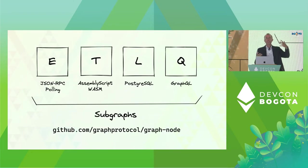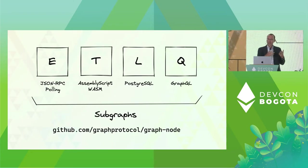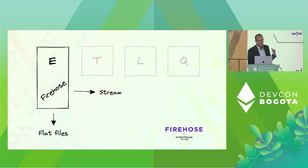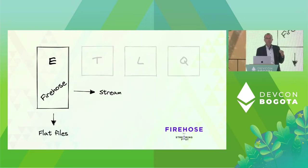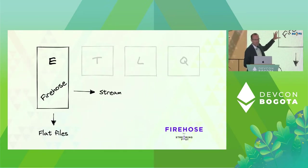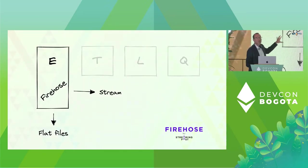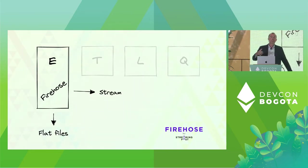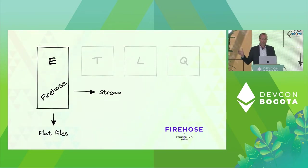One of the reasons we were brought in was that we could push The Graph to new heights in terms of performance. To do that, we brought, first thing, the Firehose — something at the extraction layer. Our take to boosting performance by one, two, three orders of magnitude. The first layer of extraction.